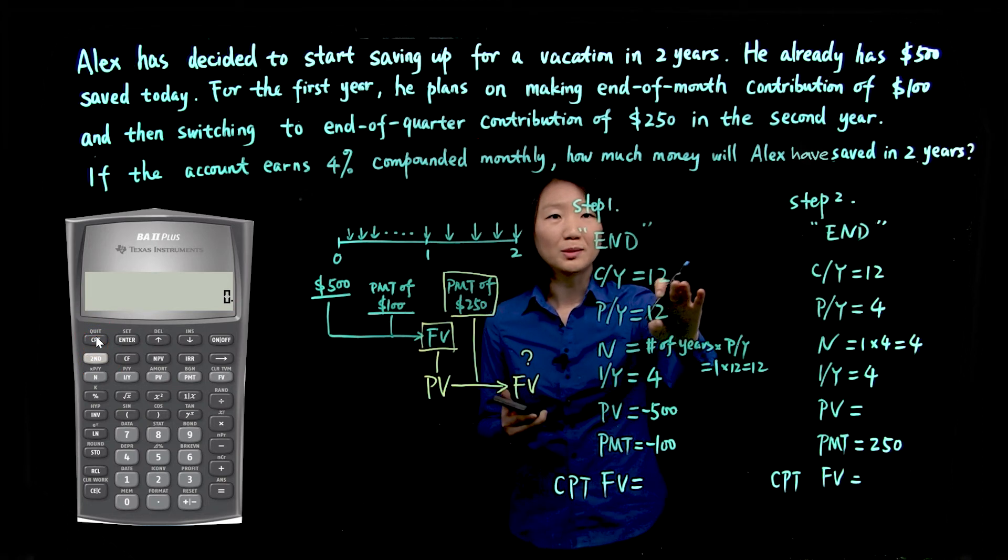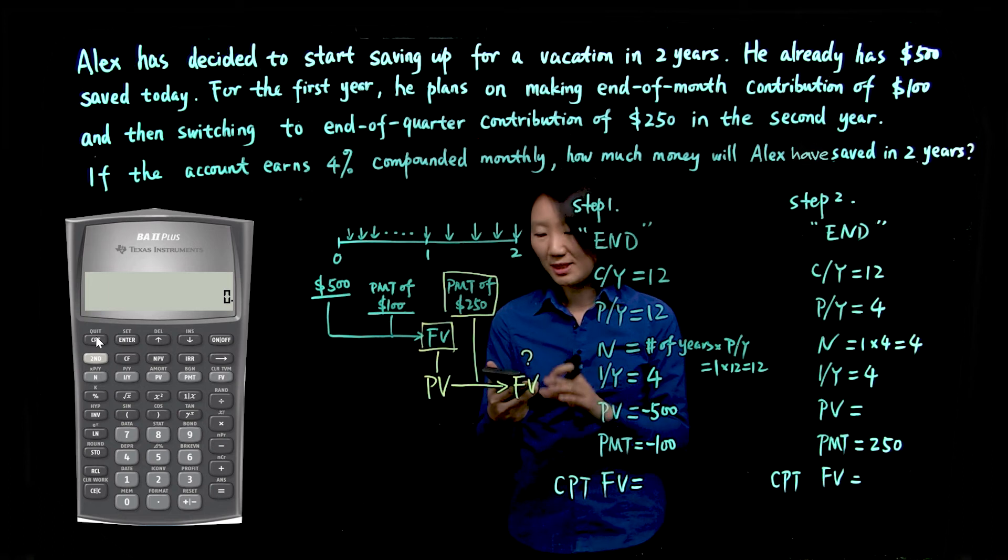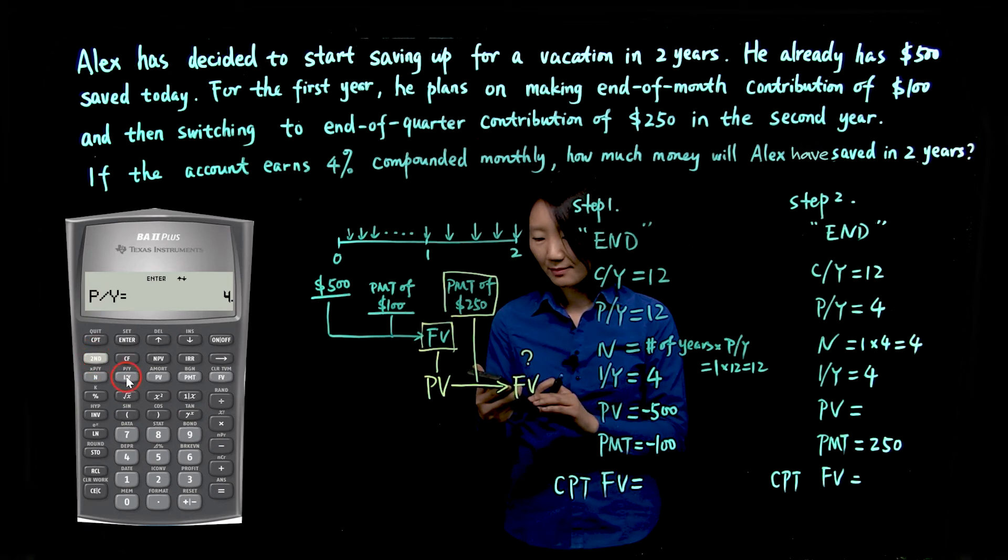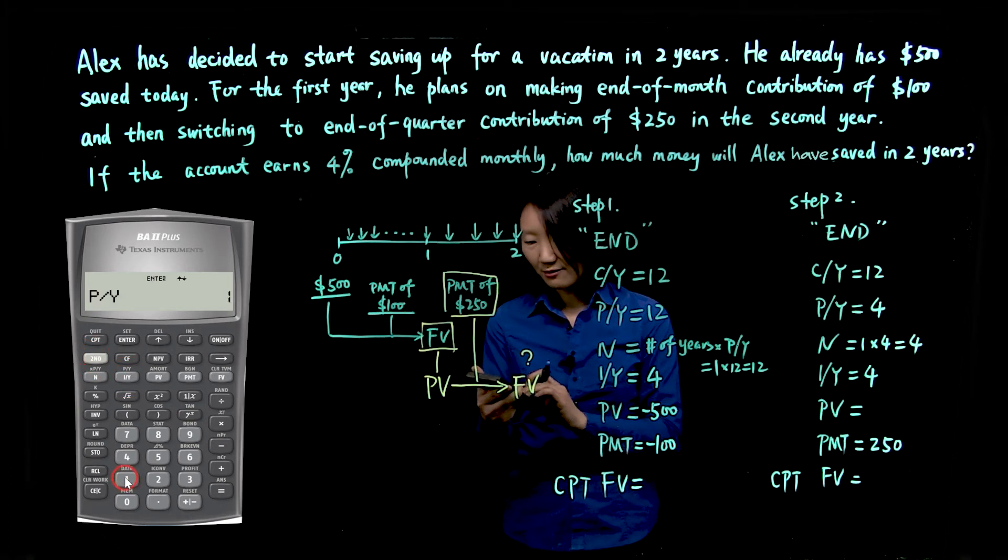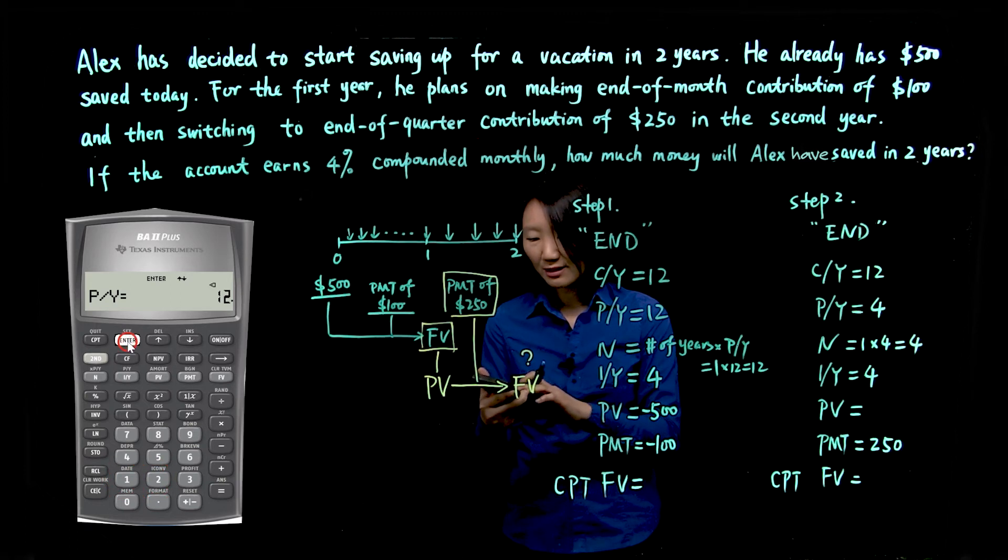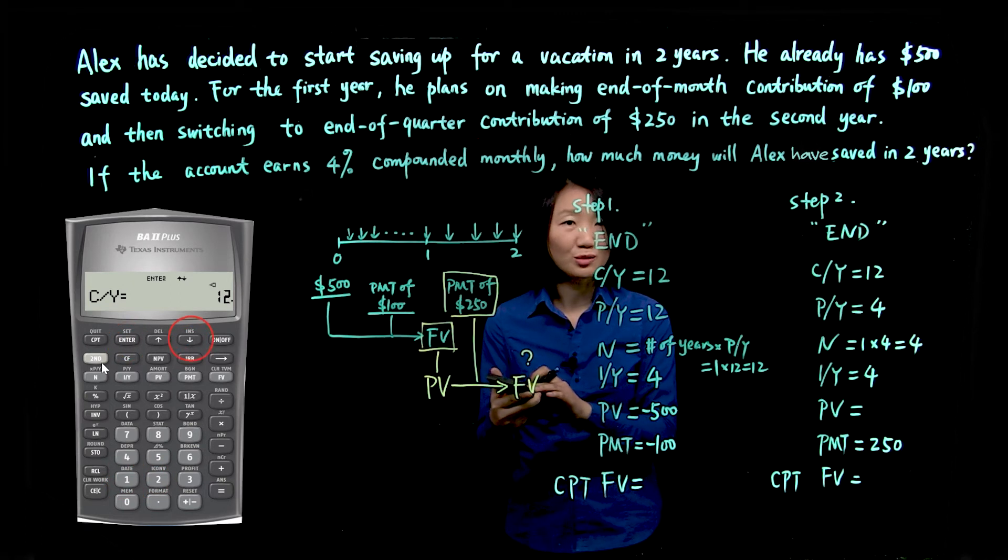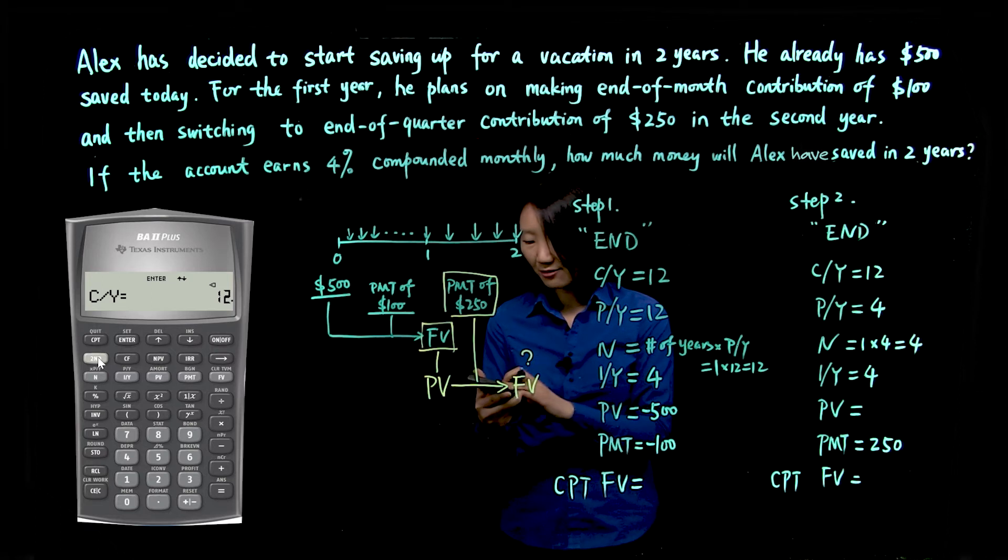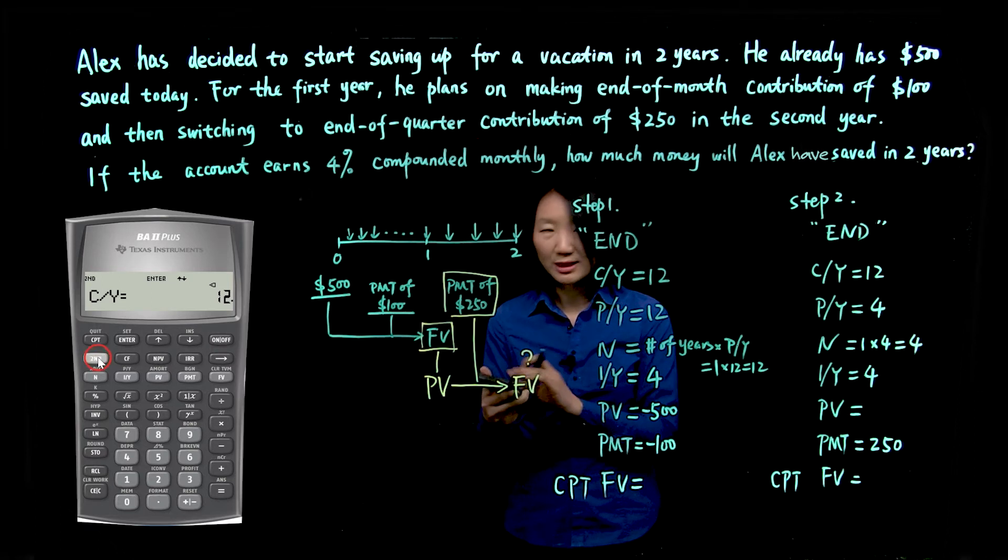Make sure you're in the main mode. Now, to put in CY and the PY number, go to second PY. So PY is 12, enter, scroll down. CY is also 12 by default. Second and quit.